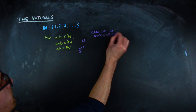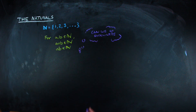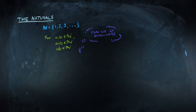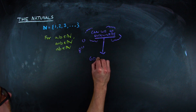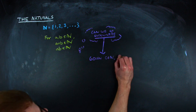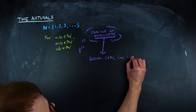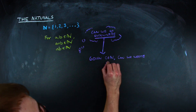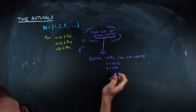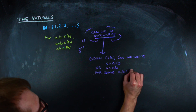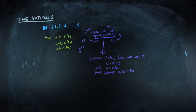But this becomes more interesting if you think about going backwards. That is, if you have a natural number, how can you decompose it into the product of two different natural numbers? And if you have a natural number, how can you decompose it into the sum of two natural numbers?